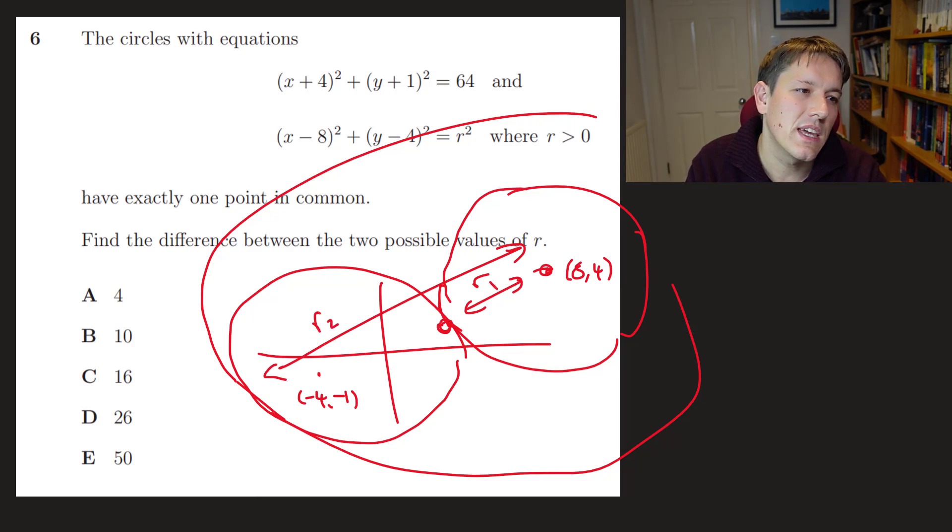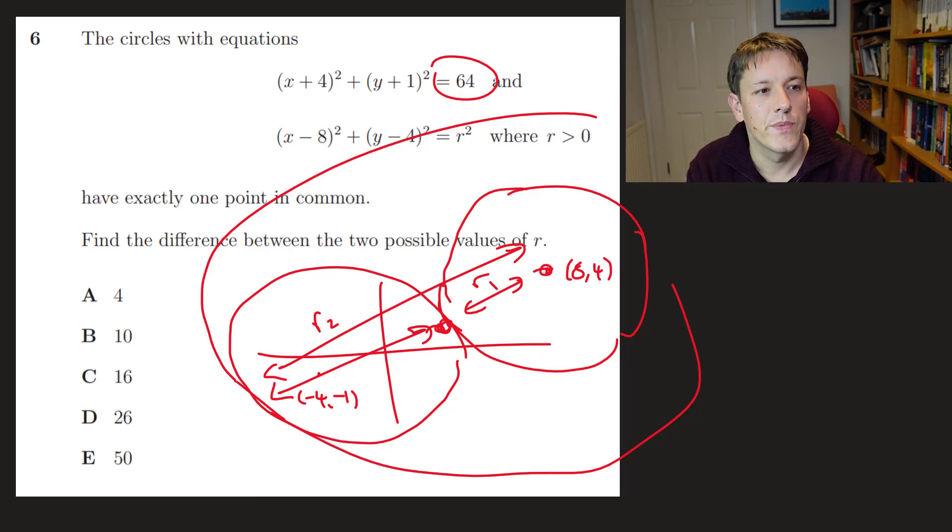let's call it R1 and R2, would be here. So actually, the difference is just the diameter of the other circle here. And we know that's got radius 8, because 8 squared is 64. So the difference is the diameter, 2 times 8, which is 16. And the answer is C.